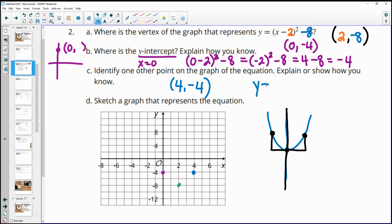So you could go y equals 1 minus 2 squared minus 8 and calculate that. So 1 minus 2 is negative 1. Squared is positive 1. So 1 minus 8 gives us negative 7. So we would know that this point was on there. So then at 1, we'd be at negative 7.